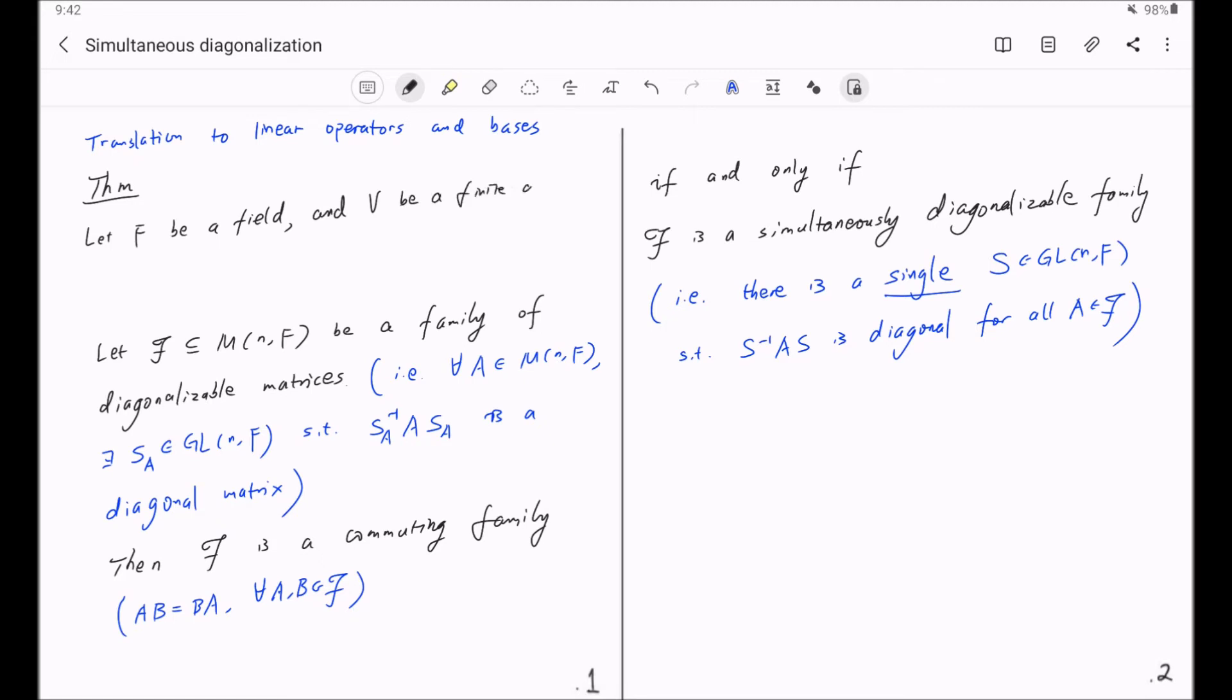Let V be a finite dimensional vector space over F. And let L(V) over F be the set of linear operators from V to V. And let F be a subset of these linear transformations on V, be a family of diagonalizable operators.